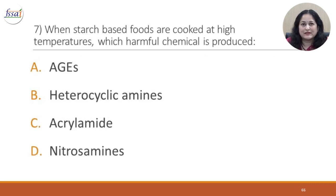Question 7: When starch-based foods are cooked at high temperatures, which harmful chemical is produced? A. HAA. B. Heterocyclic amines. C. Acrylamide. D. Nitrosamine.